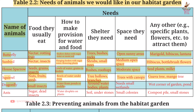Dragonfly: Food — Fruits, Seeds, Plants. Space needs — Small wetlands. Other — Wet corner of garden, pond. Ants: Food — Sugar, Dead insects. Water provision — Water droplets on plants. Shelter — Soil, under stones. Space — Small colonies. Other — Compost pile, small stones.